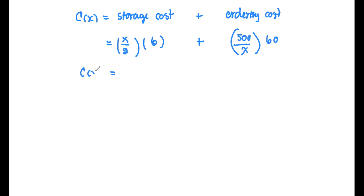That gives us the function C(x) in the form of 3x plus 30,000 divided by x.